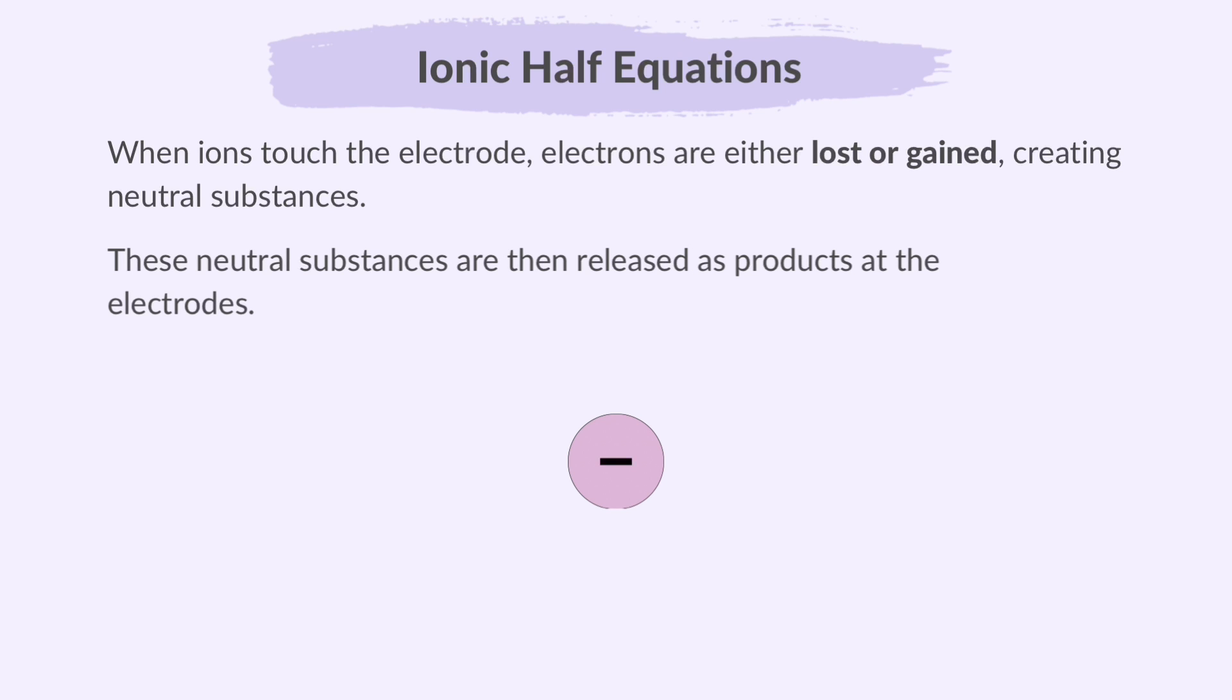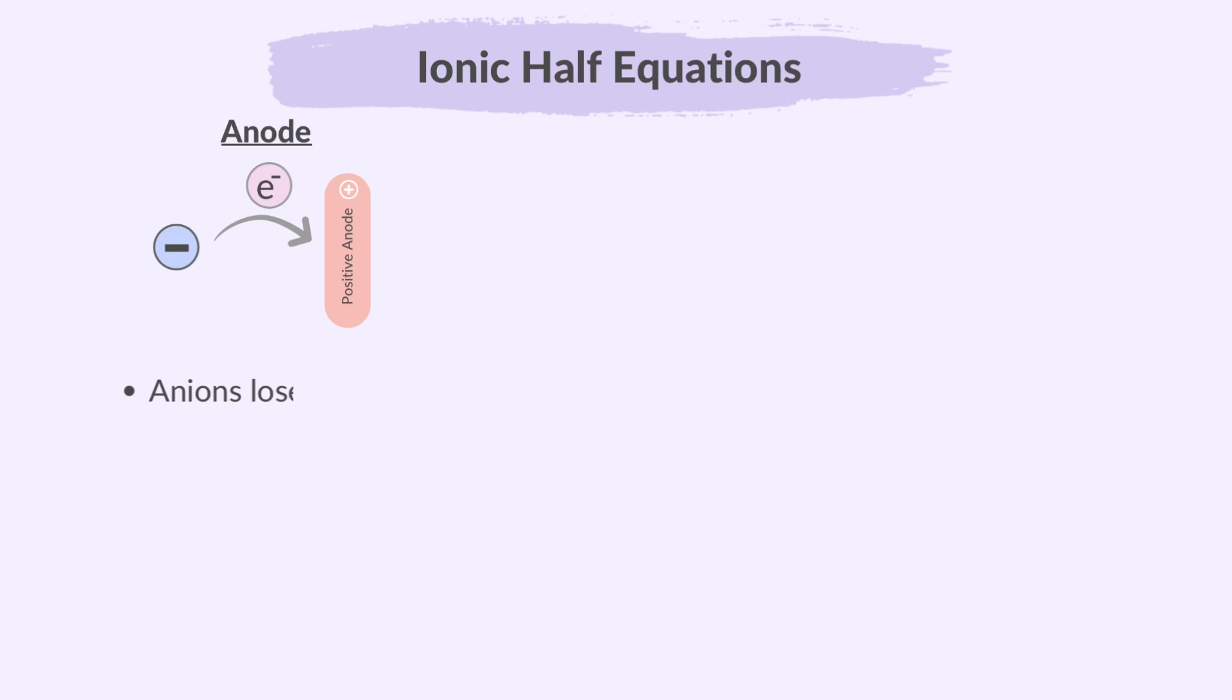These neutral substances are then released as products at the electrodes. At the anode, negative ions lose electrons. This is oxidation. So, oxidation is when something loses electrons.